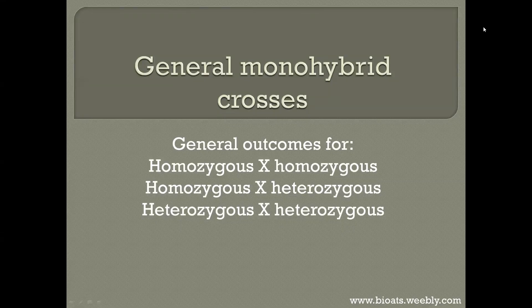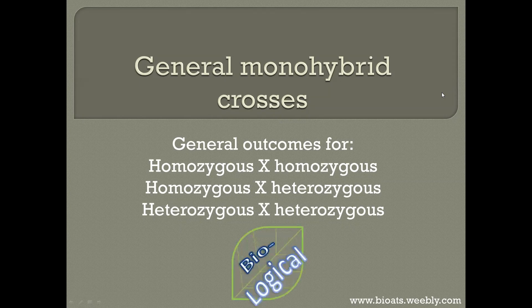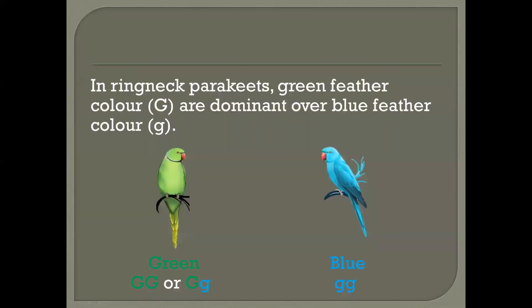Looking at general monohybrid crosses, we want to find out the outcome when we mix two homozygous individuals for differing characteristics, when we mix a homozygous individual with a heterozygous individual, and when we mix two heterozygous individuals. The example we'll be looking at is that of the Indian ringneck parakeet.